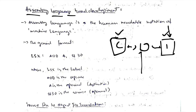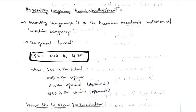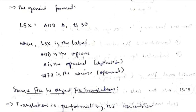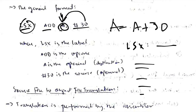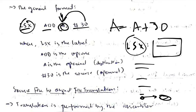Assembly language has four parts: label, opcode, destination operand, and source operand. For example, 'ADD A, 30' is equivalent to a = a + 30. The label (e.g., LSX) allows branching — you can reference it later to jump back to that instruction, similar to a goto. This is called branching. The source file written in assembly must be converted to binary, since computers understand only binary.